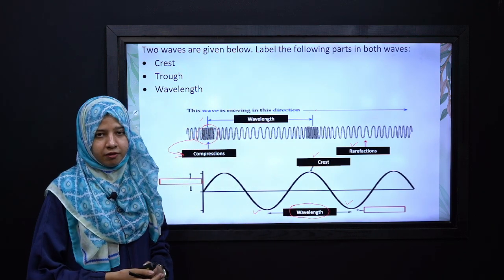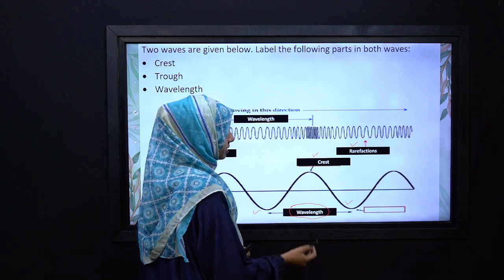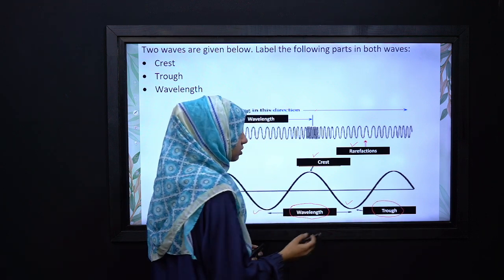The upper part is called the crest, while the lowest part is called the trough.